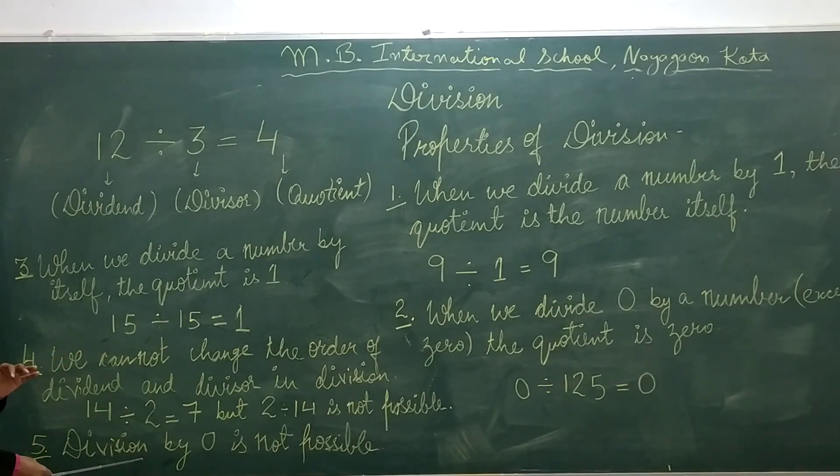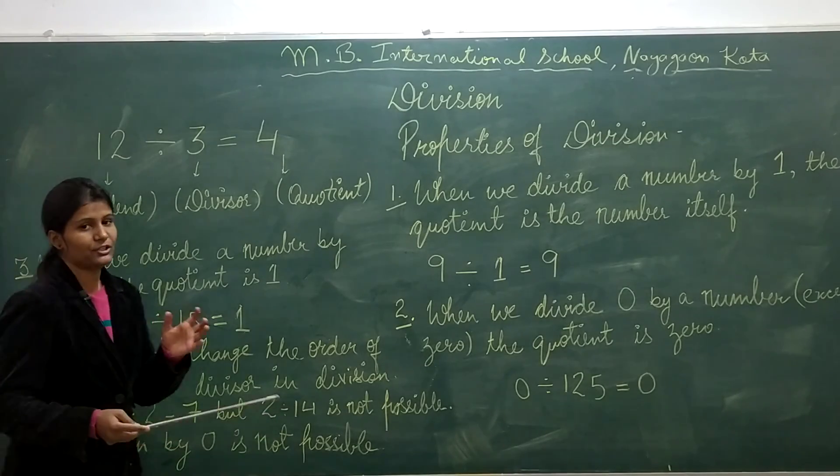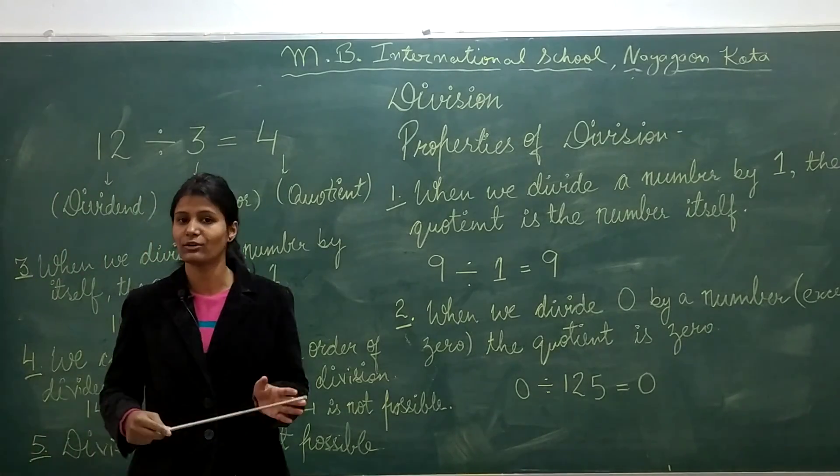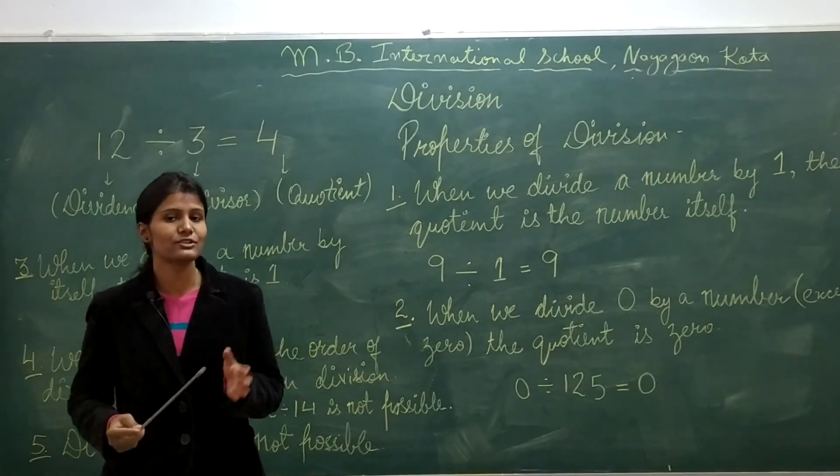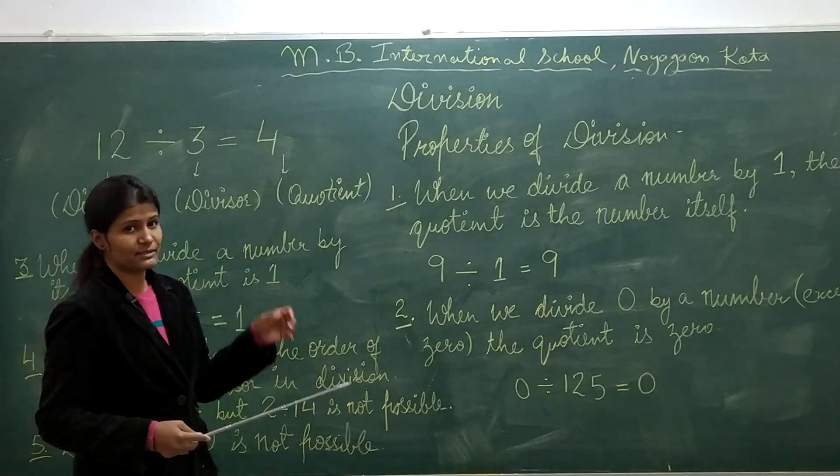Fifth, division by 0 is not possible. You cannot divide any number by 0. Now let us solve some examples.